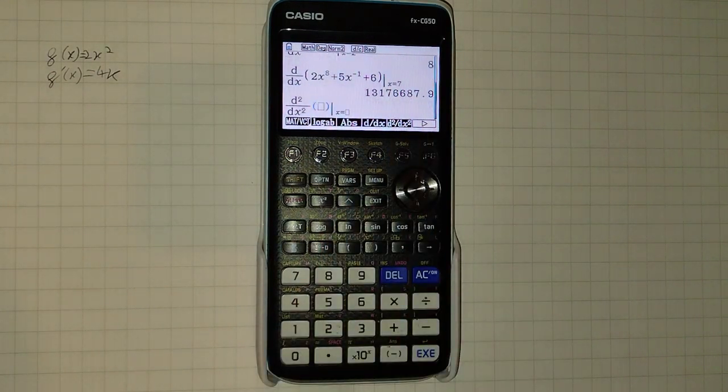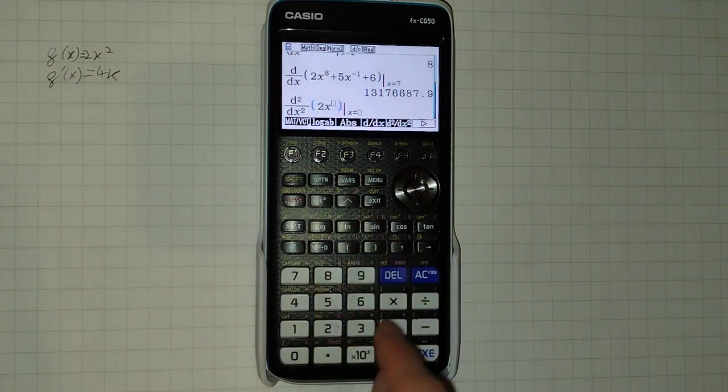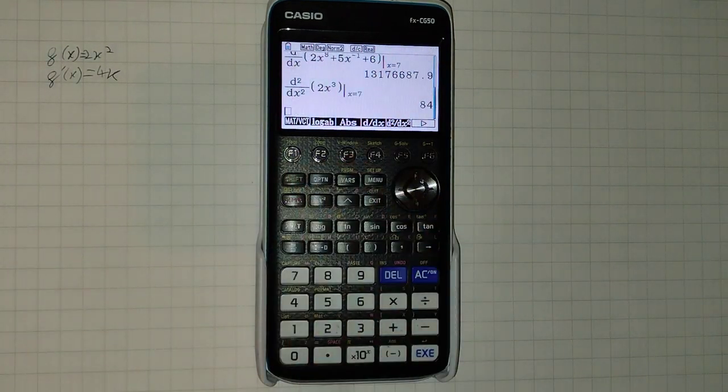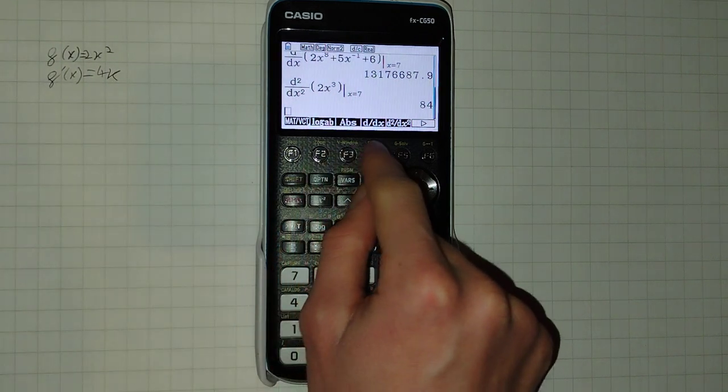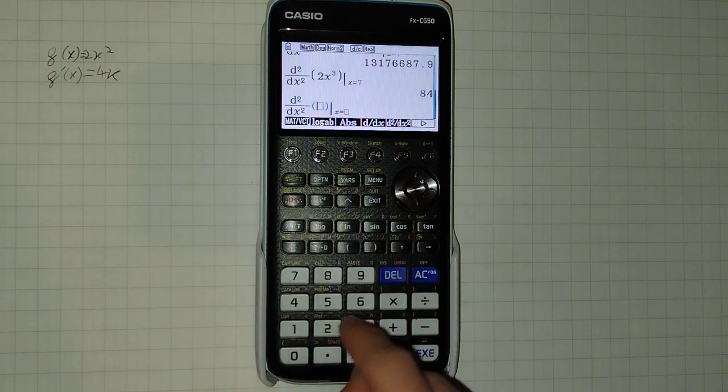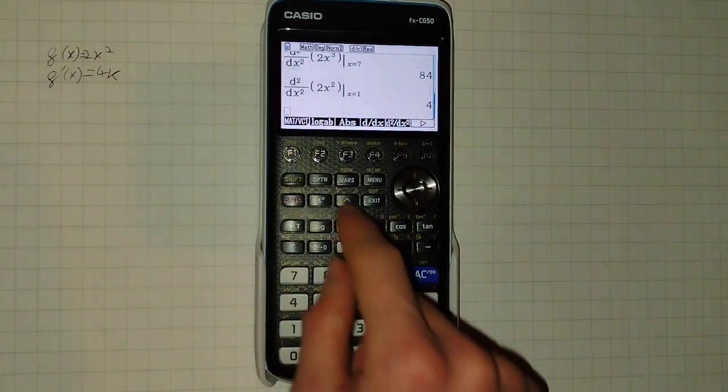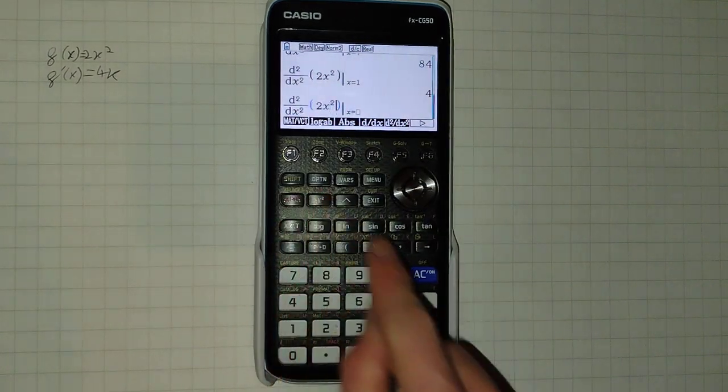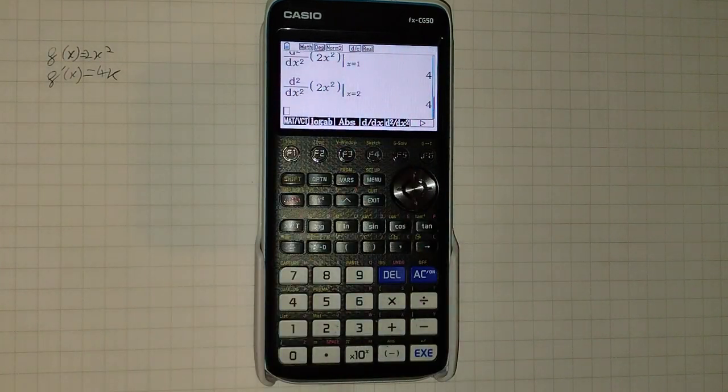You may also notice you can perform second derivatives. And if I go back to this example, the second derivative will actually be a constant. So I can put in 2x squared, evaluate it at 1. And, or I could do 2x squared, evaluate it at 2. And you can see it's still the second derivative.